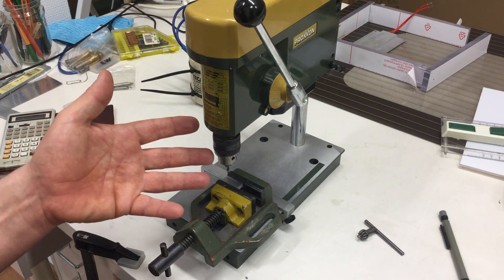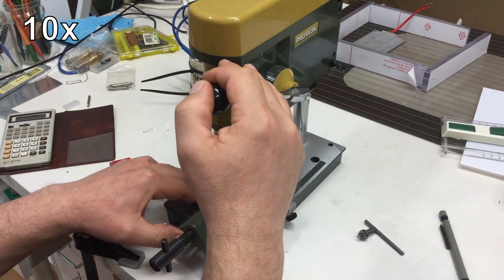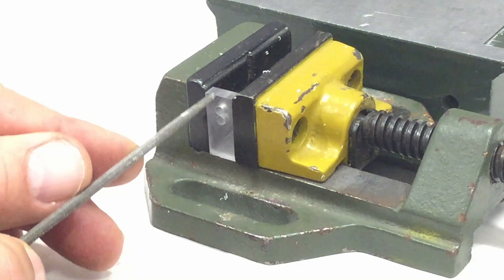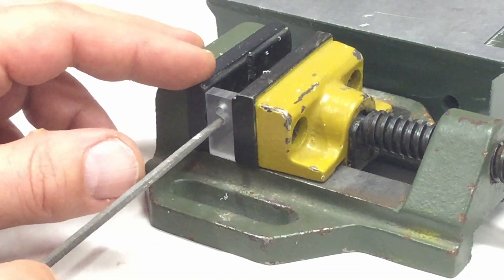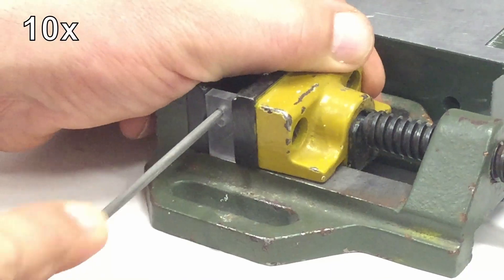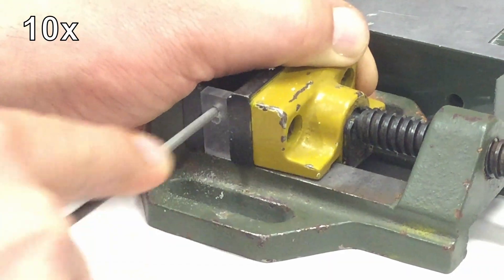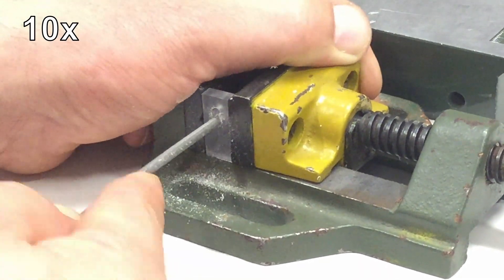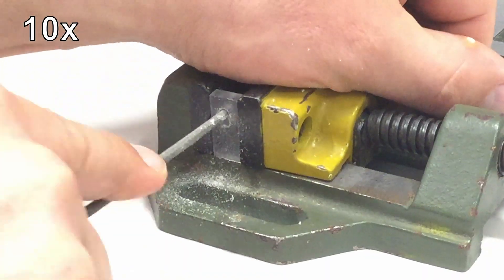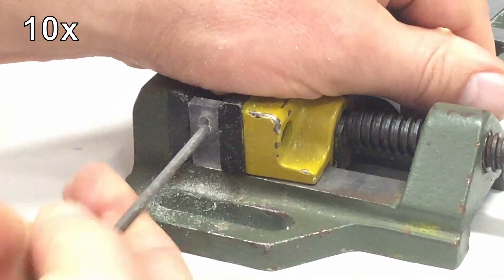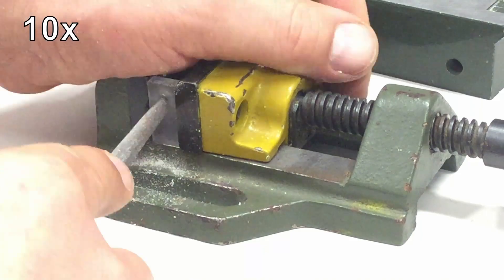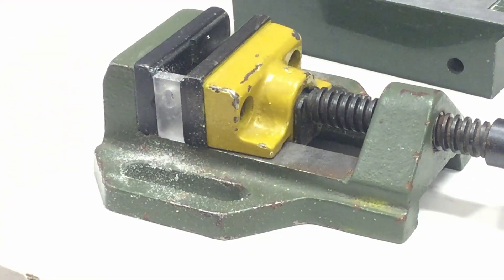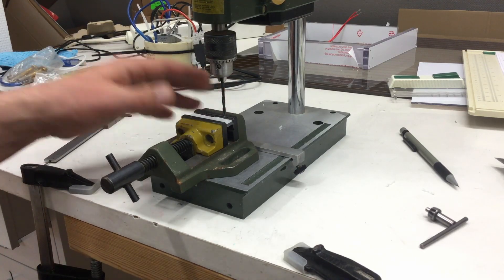And I need some other small parts for the innards of the case. Both have to be drilled, of course. This part here needs an elongated hole, so I drilled two holes just half a millimeter apart. And now we file. Good enough. The last two holes for now.